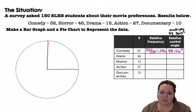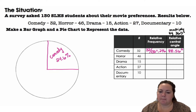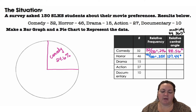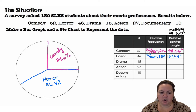24.6 percent is kind of close to about 25 percent, so I'm going to take about a quarter of my circle for comedy and label it 24.6 percent. Horror is 46 out of 130, which is 0.354. Multiplying that by 360 degrees gives 127.44 degrees. This is an obtuse angle — about a third of the pie chart — so 35.4 percent.